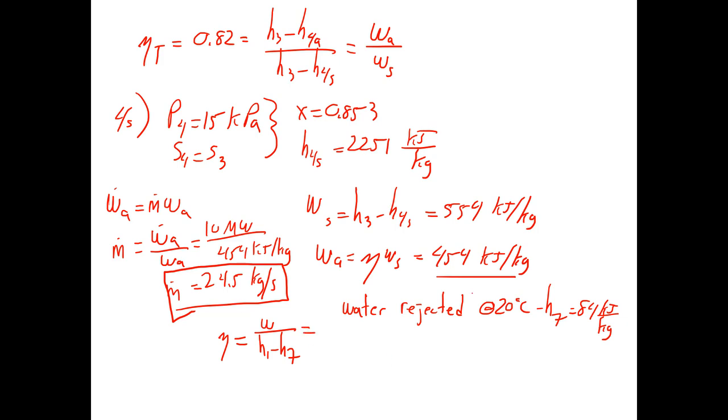If we were to actually plug in our math here, 454 kJ/kg for the specific work of the turbine, H1 from the prior slide, H7 from here, we would get an overall efficiency.